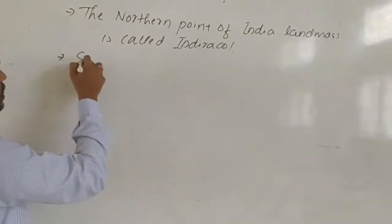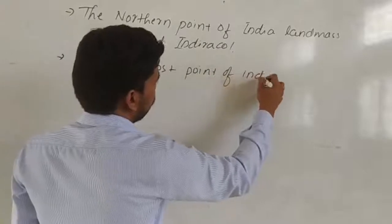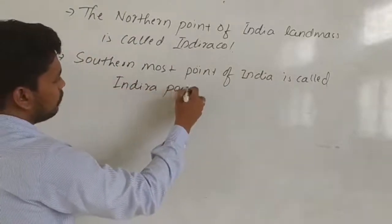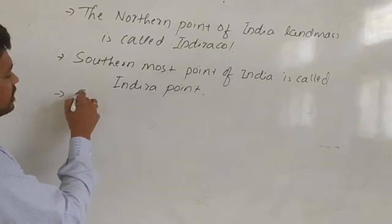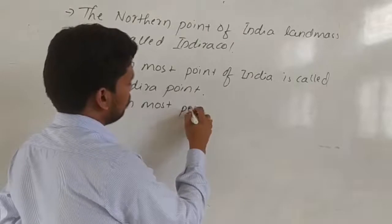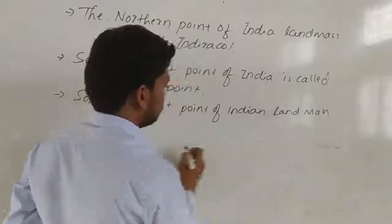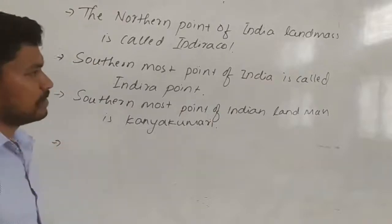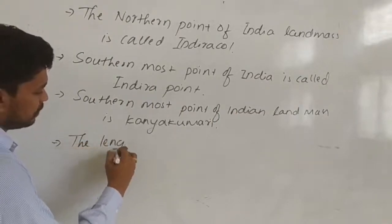The northernmost point of the Indian landmass, where the Siachen Glacier is located, is called Indira Col. The southernmost point of Indian landmass is Kanyakumari. The southernmost point of Indian frontier is Indira Point. India has a length of 3214 kilometers from north to south.